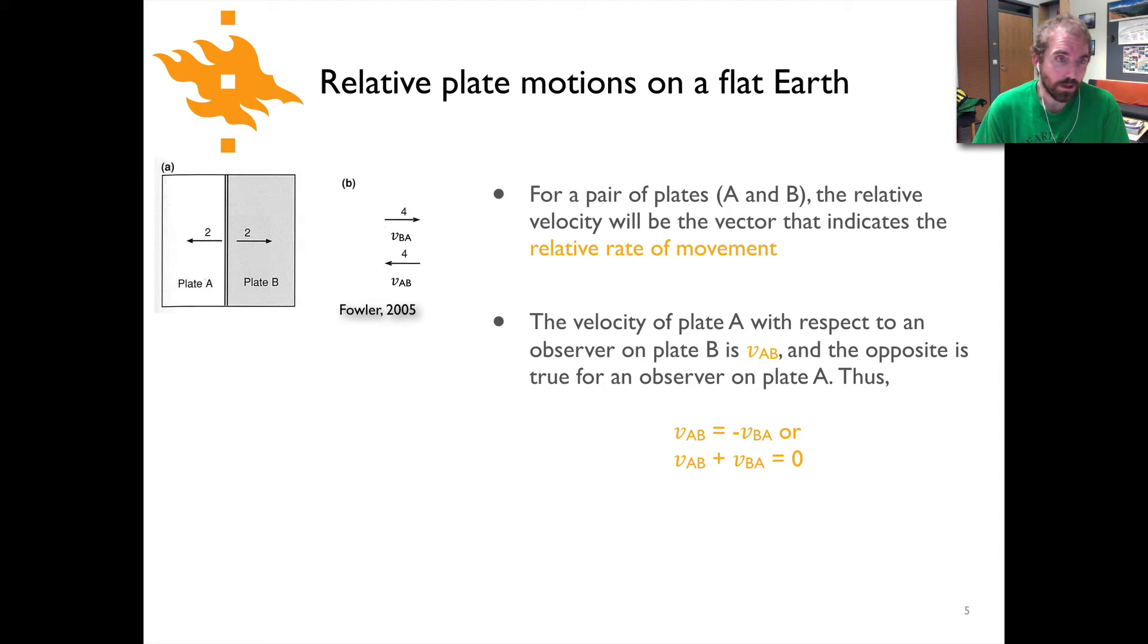The velocity of the plates relative to one another can be described in two different ways. The velocity of plate A with respect to an observer standing on plate B would be called VAB. You could imagine yourself standing on plate B and you would see plate A moving away from you with a velocity of four. The important thing is that because we have these two different perspectives, they're equal and opposite to one another, so VAB equals minus VBA, or if we add the two together their sum comes to zero.